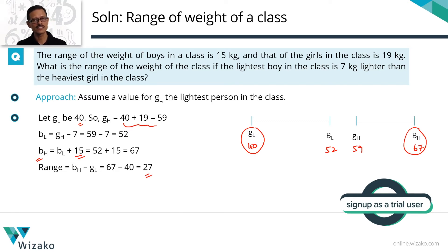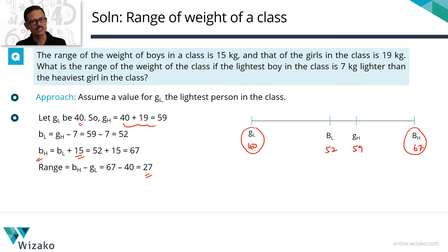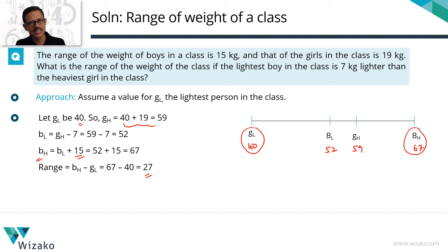Keep in mind: when multiple groups are given with a link between them, first try to arrange all members in ascending order. Once you have all the gaps filled in, just plug in a value for one person and get to the answer. Algebra is probably not the best approach here — it takes more time and you could go wrong. The ascending order number line method is the best way to solve this question.